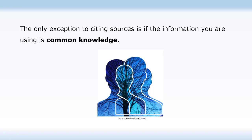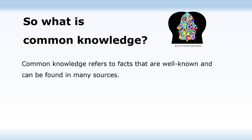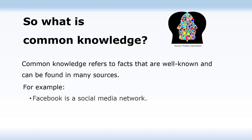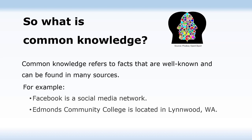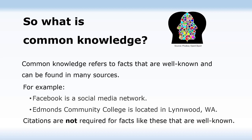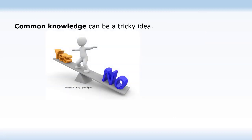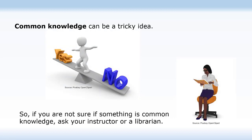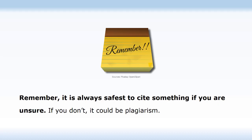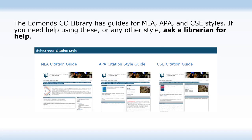Most students may not mean to plagiarize, but using another person's work without listing them as the source is considered plagiarism. The best way to avoid plagiarism is to create citations for each source of information whenever you paraphrase, summarize, or take exact information from someone else's work. The only exception is if the information is common knowledge — facts that are well known and can be found in many sources, such as 'Facebook is a social media network' or 'Edmonds Community College is located in Lynnwood, Washington.' If you are not sure whether something is common knowledge, ask your instructor or a librarian. It is always safest to cite something if you are unsure. The Edmonds Community College Library has guides for MLA, APA, and CSE styles, and librarians are available to help.